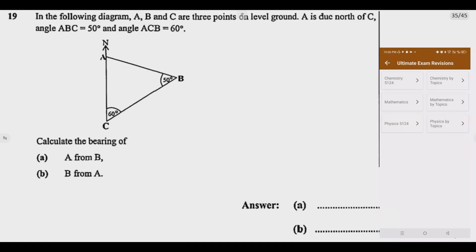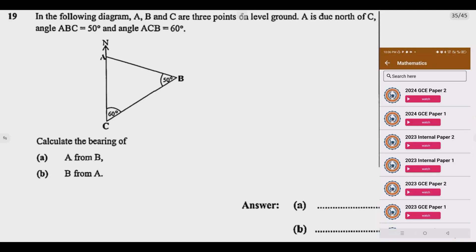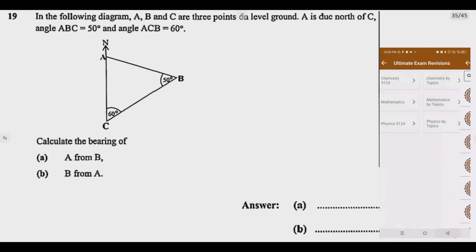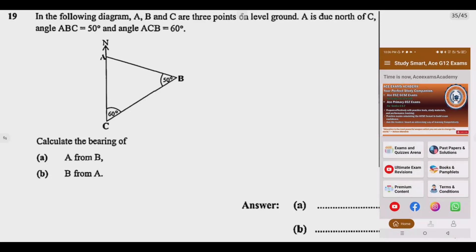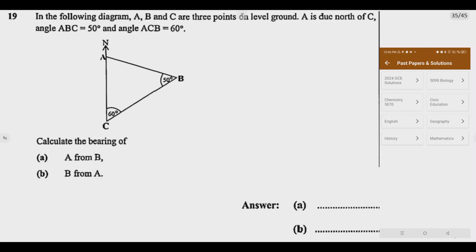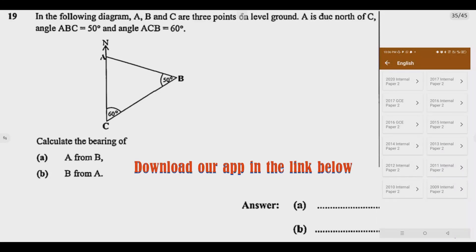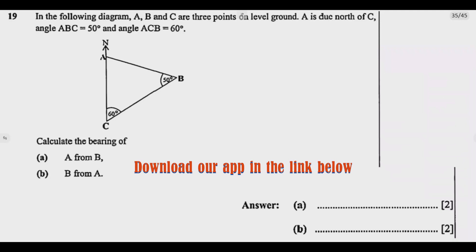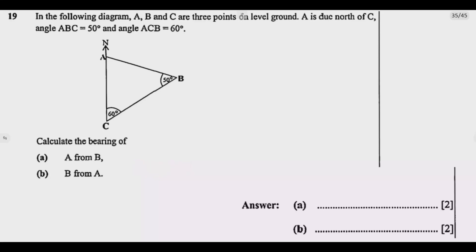These are the two questions, and each question carries two marks — that's four marks. There is always a question on bearings. We need to use the properties of parallel lines, which are the north lines, and also angles in a triangle. We also need to remember that bearings are measured clockwise from the north.